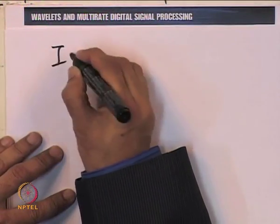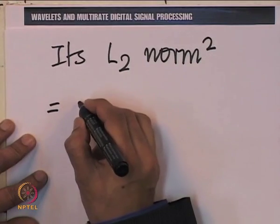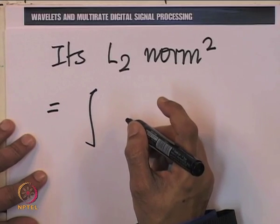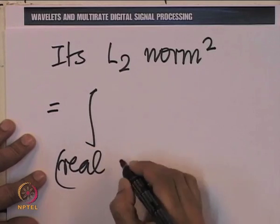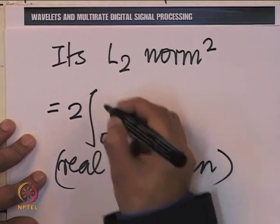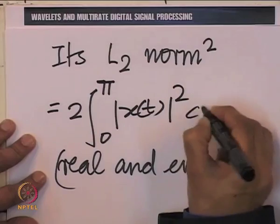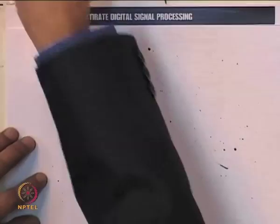We expect that if the raised cosine is used in digital communications, it should do well in terms of its uncertainty product — and that is exactly what we shall now investigate. The function is real and even, so using symmetry, the L2 norm squared equals twice the integral from 0 to pi of |x(t)|^2 dt, which is a straightforward integral to evaluate.